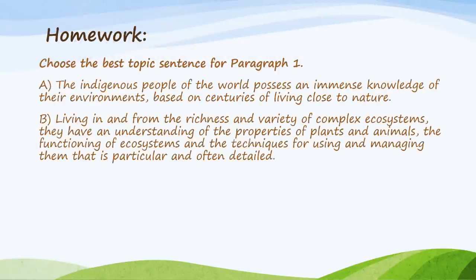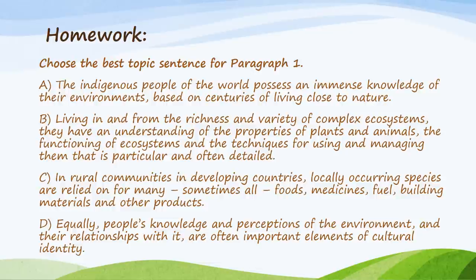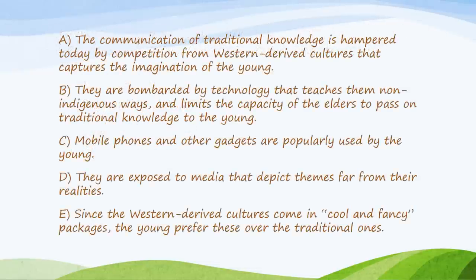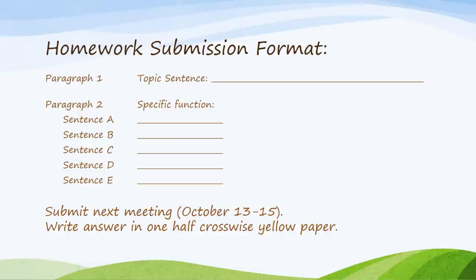Here is your homework. Forms A, B, C, and D are actually just one paragraph — you have to choose which is the best topic sentence. For another homework, examine paragraph two and identify the function of each sentence: does it serve as the topic, a detail, or is it irrelevant? Or is it a clincher — a sentence that wraps up the ideas and leaves a strong impact on the readers? Pause the video and write your answers. This is your homework submission format, to be submitted next week.